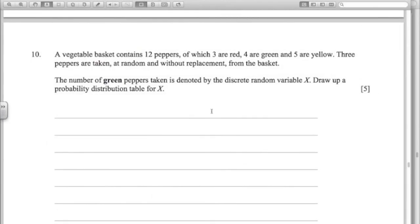I just wanted to look at a question where this idea of working out the probabilities using permutations and combinations really comes into its own. It's really good to recognize these kinds of questions. Here we've got a situation with a vegetable basket with 12 peppers: 3 red, 4 green, 5 yellow. We're taking three peppers out at random without replacement.